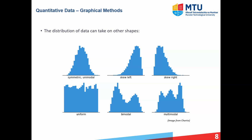We also have a uniform distribution, where the bars of the histogram are all approximately the same height. We have a bimodal distribution, which has two peaks — for example, students scoring very low and another half of the class scoring very high. We can also have a multimodal distribution with three peaks. It's worth noting that the bimodal distribution is also an example of a symmetric distribution — if you imagine a line through the middle, it folds approximately symmetrically.